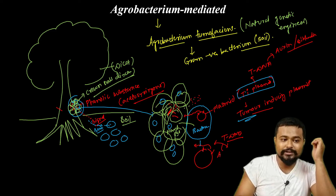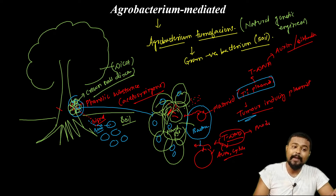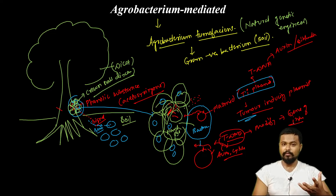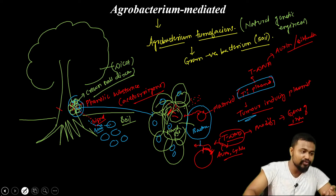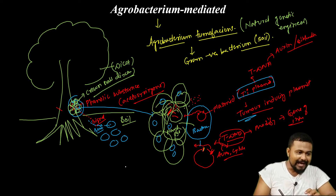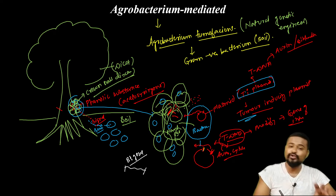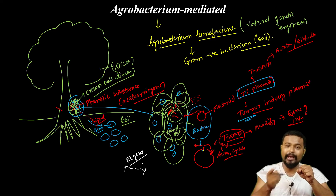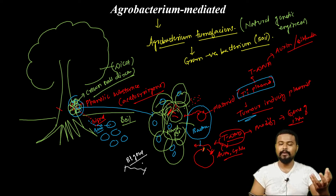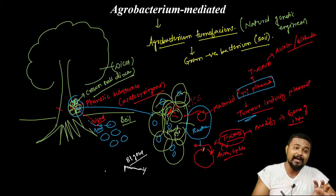The T-DNA contains genes for auxin and cytokinin. Scientists realized the T-DNA can be modified to carry a gene of interest instead. So now, our gene of interest can be inserted. For example, an important gene called the Bt gene — Bacillus thuringiensis gene — can be inserted using this method.